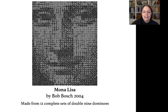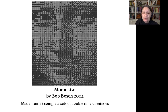This image of the Mona Lisa by Bob Bosch is made from exactly twelve complete sets of dominoes. They have not been cut into squares to create the image. Instead, Bosch has kept the dominoes as rectangles and used optimization to create this portrait under that constraint.